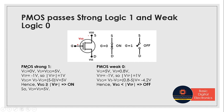First, let's see how PMOS passes strong logic 1. Consider a low input voltage: VG = 0 V, and since VDD is connected to the source terminal, VS = VDD = 5 V. The threshold voltage is −1 V, so modulus of VTP = 1 V. Now VHSG = VS − VG = 5 − 0 = 5 V. Since 5 V is greater than 1 V, VHSG is greater than or equal to modulus of VTP, which means it is creating a closed circuit between source and drain.